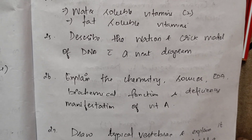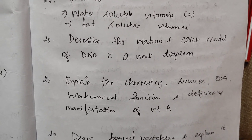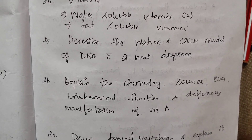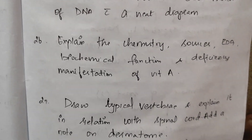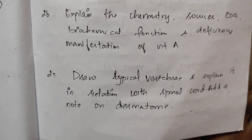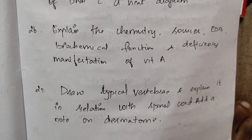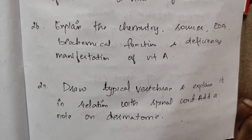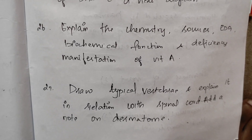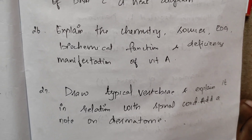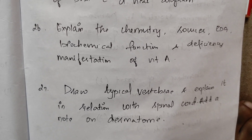Describe the Watson and Crick model of DNA with a neat diagram. Explain the chemistry, sources, RDA (recommended dietary allowance), biochemical functions, and deficiency manifestations of Vitamin A.